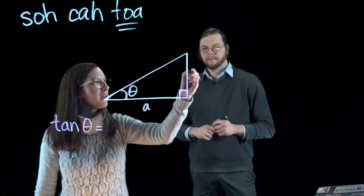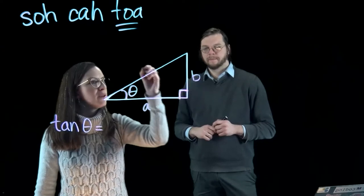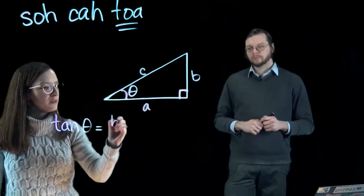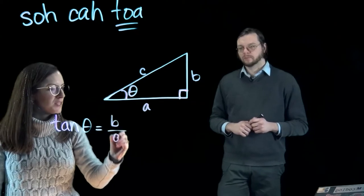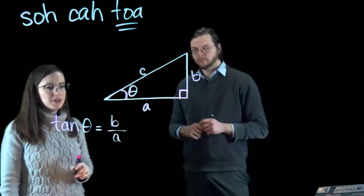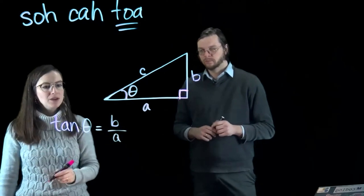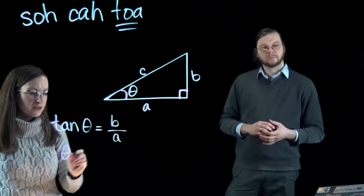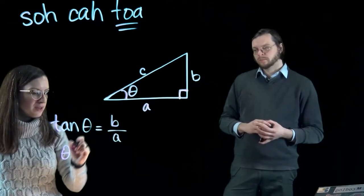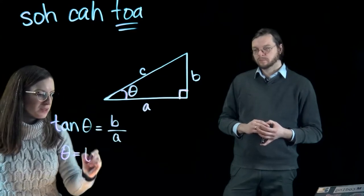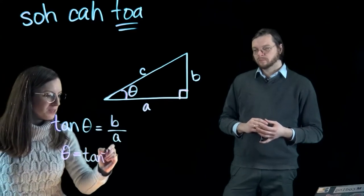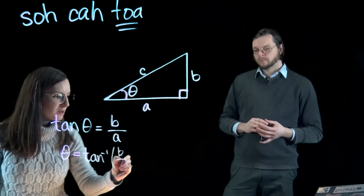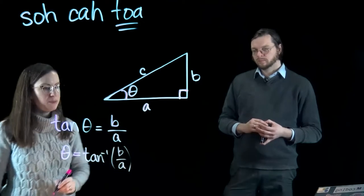Here's our A, our B, and our C sides. So opposite B over adjacent A. Now we actually want to know the angle, so we take the inverse tangent: theta equals the inverse tangent of B over A.